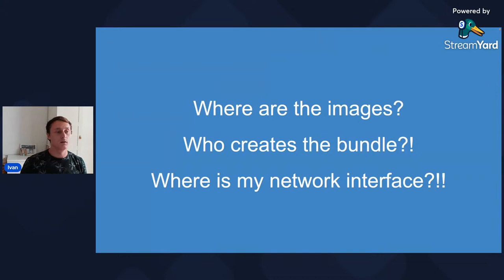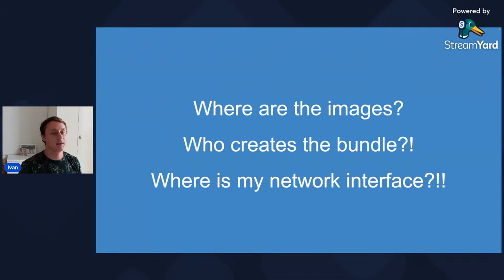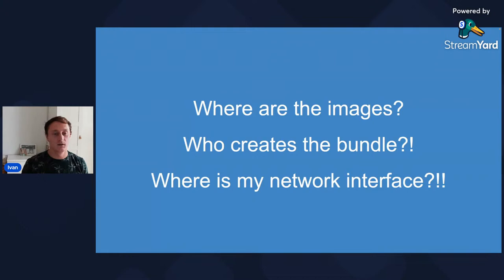We got some questions. How come we could create a container without images? If you start your container's journey with Docker, you always see images everywhere - docker run image name, or Docker file to build an image. But apparently we ran a few containers without having any images. We have these bundles, and RunC is clearly not involved in managing bundles - it just consumes them. Who creates these bundle folders? And where are the network interfaces? We just ran a container with a separate network namespace but no network interfaces. Clearly there should be another piece of software concerned with these higher-level responsibilities.